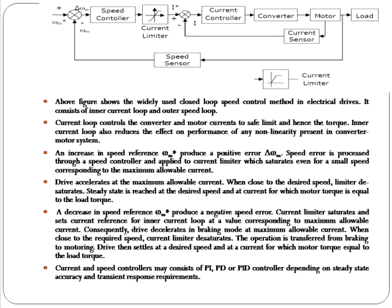The speed and current controllers internally consist of proportional-integral (PI), proportional-derivative (PD), or proportional-integral-derivative (PID) controllers, chosen depending on the steady state accuracy and transient response requirements. These PID controllers are used for these closed loop schemes.